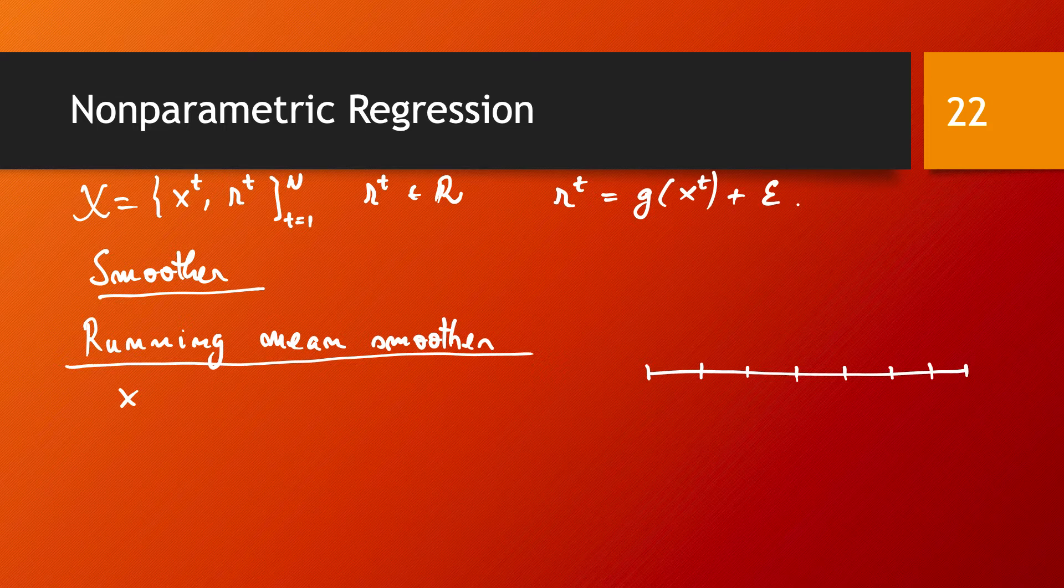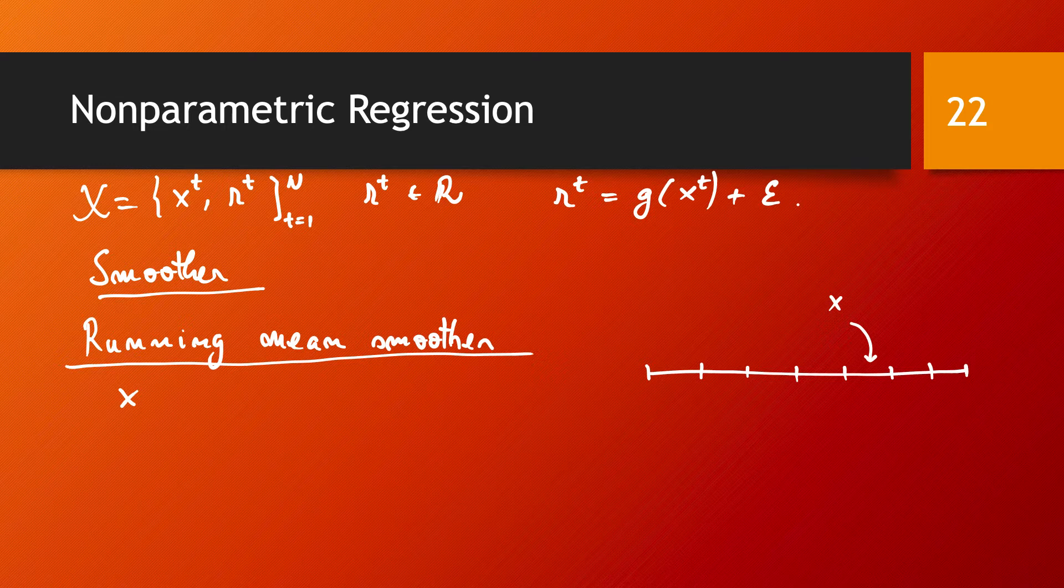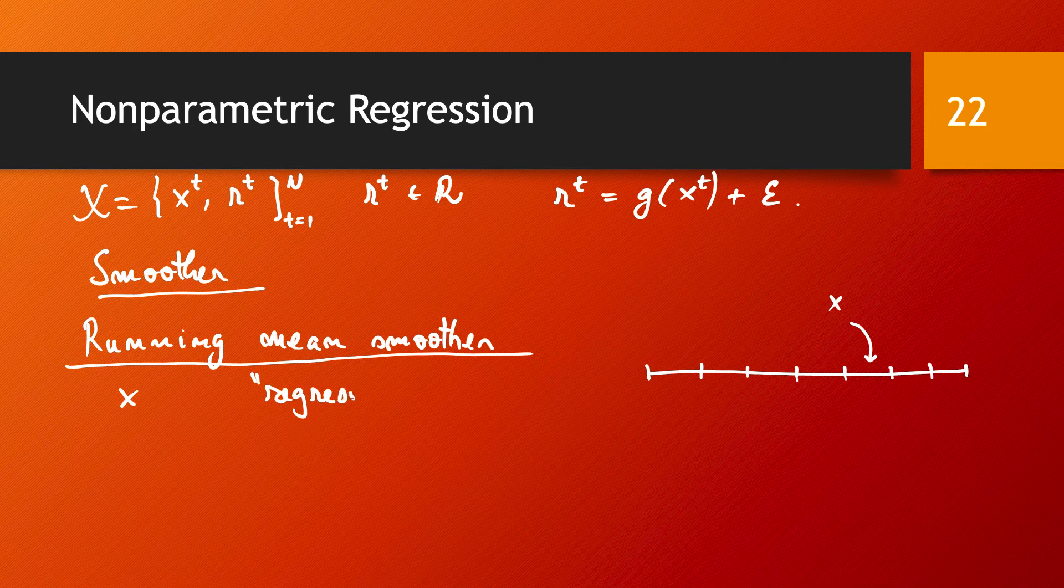You are going to check in which bin your data point is, and then you are going to average the R values of all the data points in that bin, similarly as we have done in a histogram. This is called regressogram just to suggest that we are dealing with a regression.